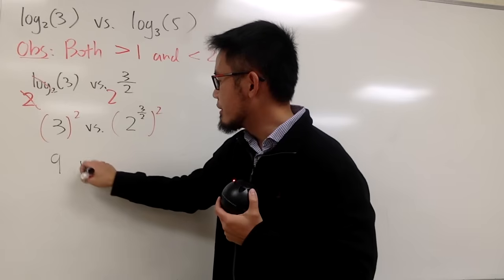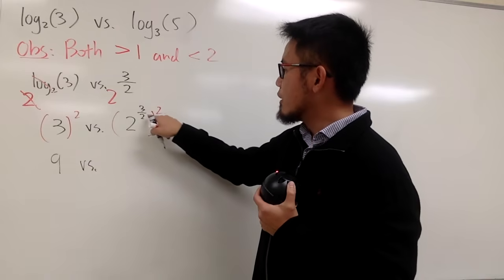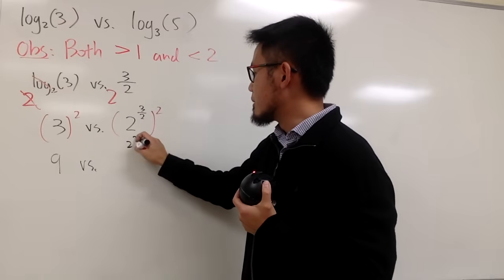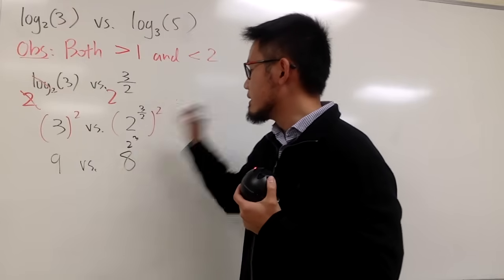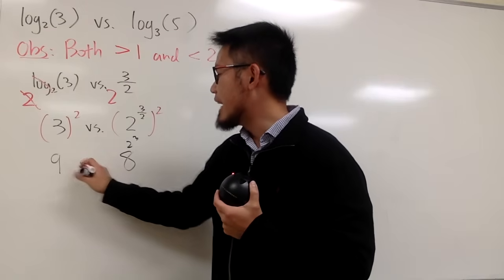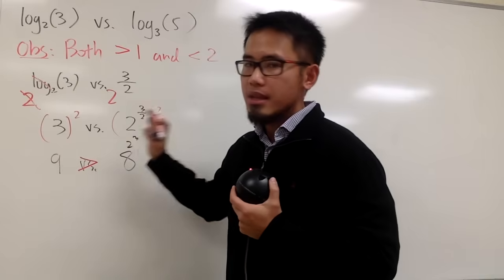And we are comparing this with, when you have this to that, of course, the power, you multiply them. And this is just 2 to the third power. And we get 8. And now, can we draw a conclusion? Yes. We can say that 9 is bigger than 8.